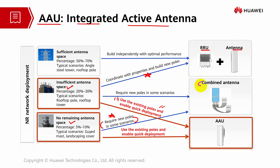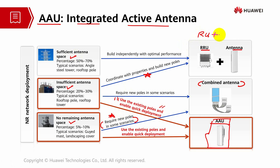When you combine RRU and antenna together, you get AAU. You can save a lot of space since you can reuse the existing pole and enable quick deployment. There is sufficient antenna space when using AAU, as it integrates both the radio unit and the antenna unit — active and passive respectively — together.